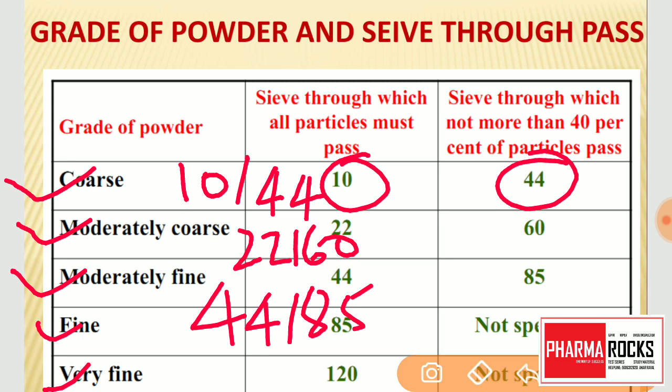The first three — coarse, moderately coarse, and moderately fine — are the most important. For fine and very fine powder, the sieve numbers are 85 and 120 respectively, and there is no separate 40% criterion for those. This table is very important for competitive exams — every year questions from this table appear in GPAT, NIPER, Drug Inspector, and government pharmacy exams.